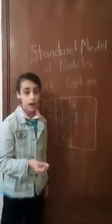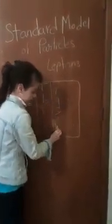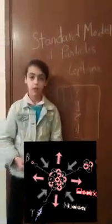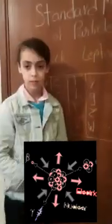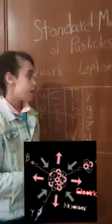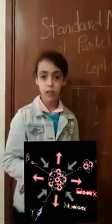We also have the Z zero and W plus and minus bosons. These are responsible for the weak force. The weak force underlies phenomena like the radioactivity of particles and the nuclear fusion which takes place within stars like the Sun.